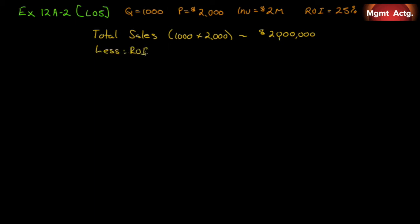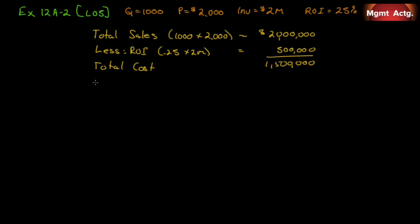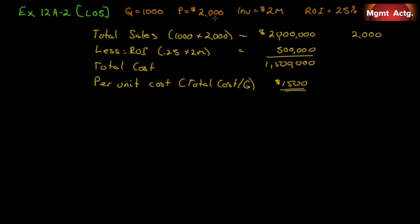We start with total sales: 1,000 units × $2,000 = $2,000,000. Less our ROI: 0.25 × $2M = $500,000. So total costs must come in at $1.5 million or less. The per unit cost is $1,500,000 ÷ 1,000 units = $1,500. Alternatively, we could have worked per unit directly: selling price $2,000 minus ROI per unit of $500 ($500,000 ÷ 1,000) equals $1,500. Either way, the target cost per unit is $1,500.